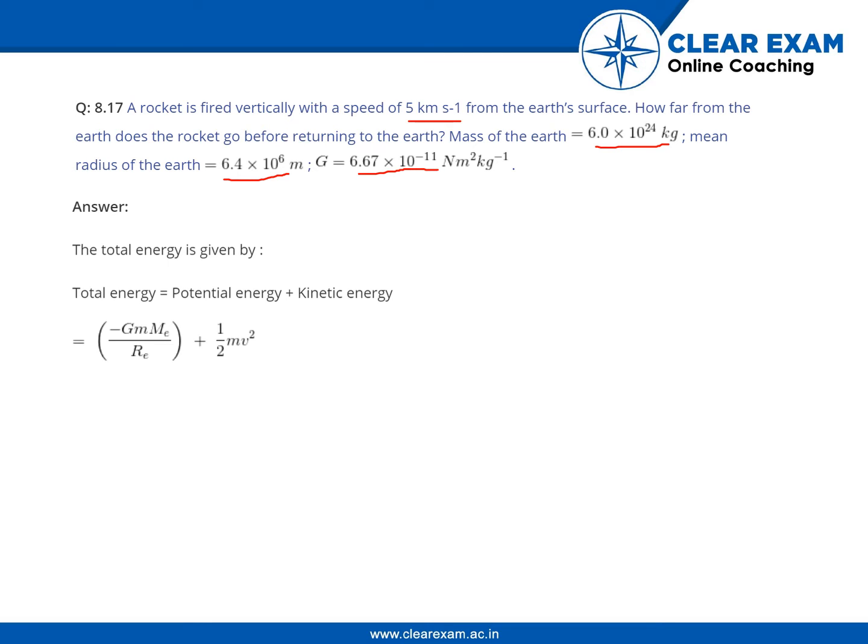The total energy is given by: total energy equals potential energy plus kinetic energy. Let's underline this point or we can highlight this. Total energy is potential energy plus kinetic energy.